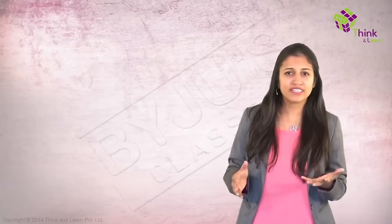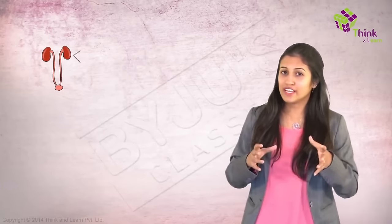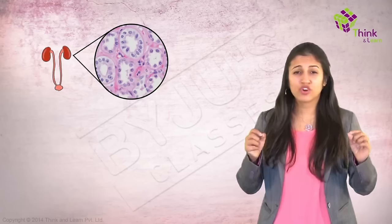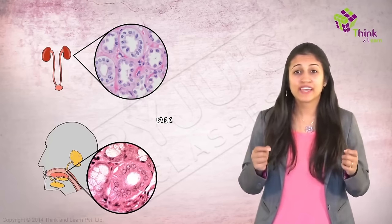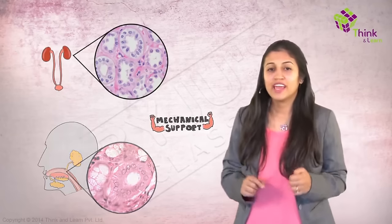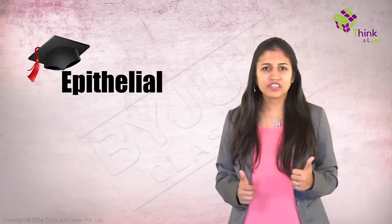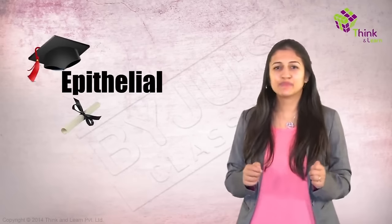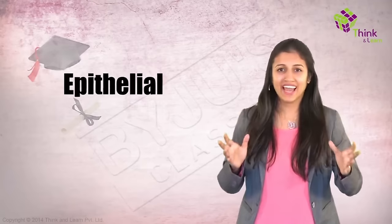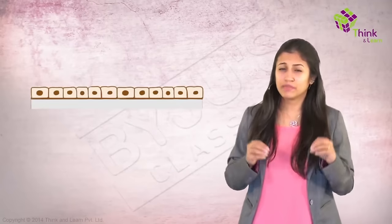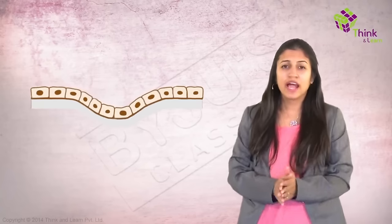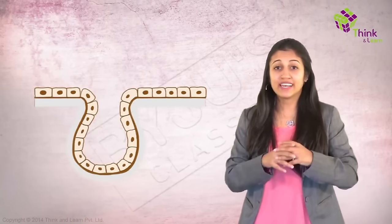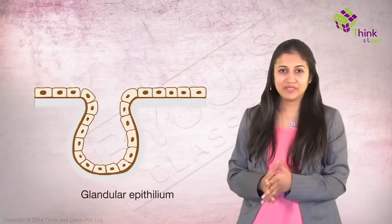Where would you find cuboidal cells? In the lining of kidney tubules and ducts of salivary glands, where mechanical support becomes important. Now, epithelial cells can graduate further, earn themselves another degree and specialize themselves to form glands. Sometimes a portion of the epithelial tissue folds inward and a multicellular gland is formed. This is glandular epithelium.